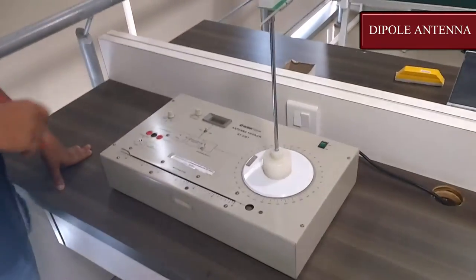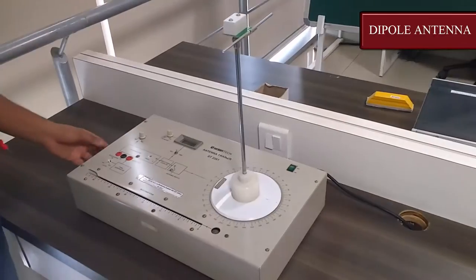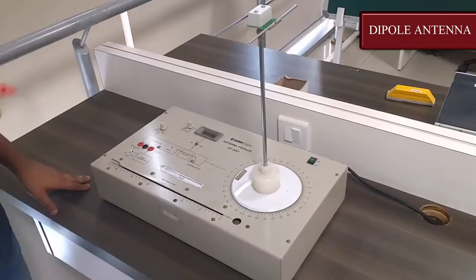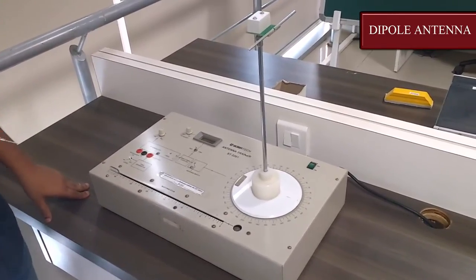Antenna trainer kit. In this we have an FS adjust which is adjusted at the maximum value. There's a modulating input in which if we apply a modulating input, the input is modulated with a frequency which is equal to the carrier frequency of the antenna.